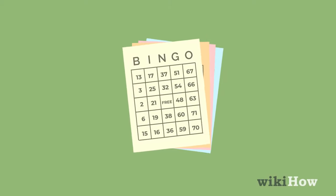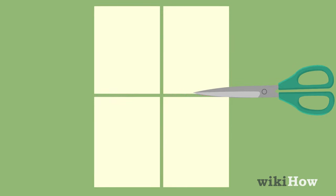To make bingo cards, first fold a piece of construction paper into four quarters. Cut along the folded lines so you have four square cards.